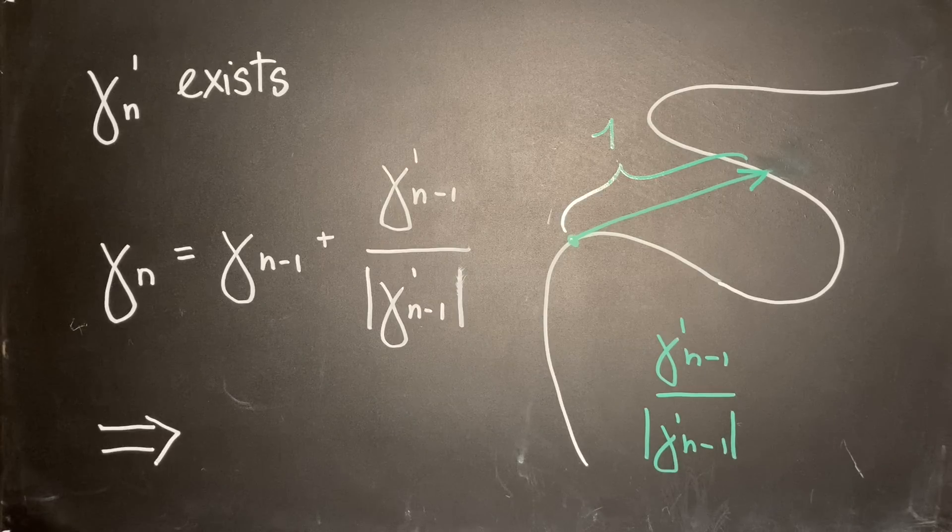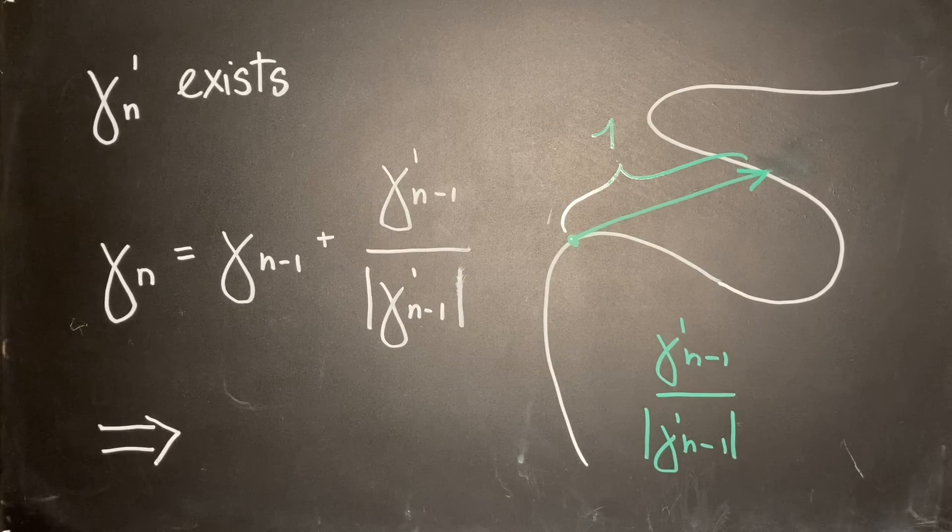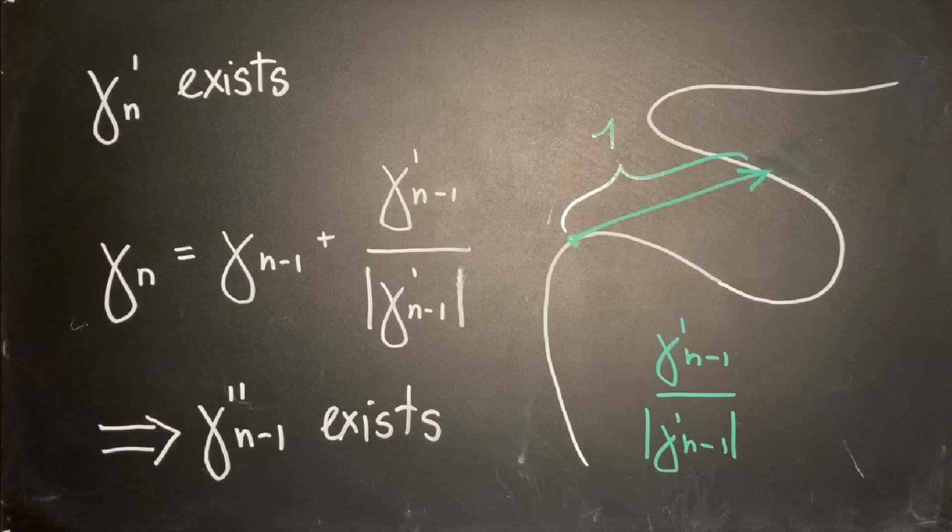Therefore, since we want gamma_n to be differentiable, the second derivative of gamma_(n-1) must exist at any time t between 0 and 1.